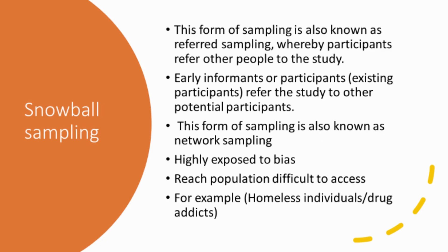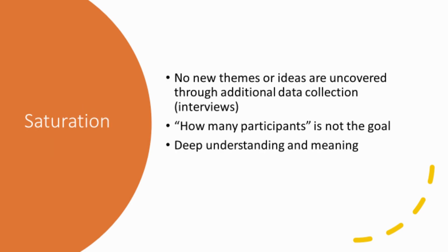Another way participants can be accessed in qualitative studies is snowball sampling, also referred to as network sampling. This is where the people you've already spoken to then refer other people they know who would be interested in the topic. It's like a snowball — you start with one person, and as it rolls along it picks up more, getting bigger and bigger.